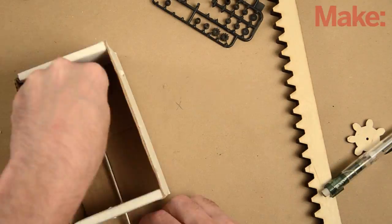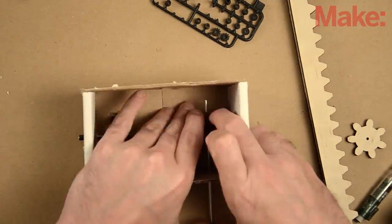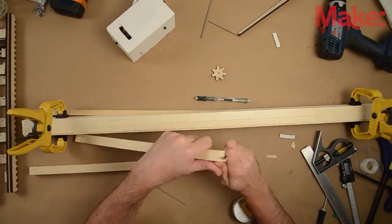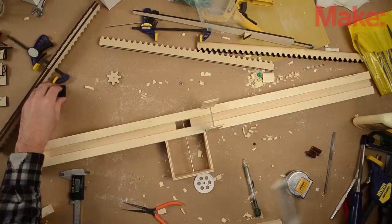Gears require somewhat tight tolerances and don't let you get away with being sloppy, so I mock up the placement in cardboard first. When I'm happy with the placement, I move the design to a wooden base with a plywood frame.